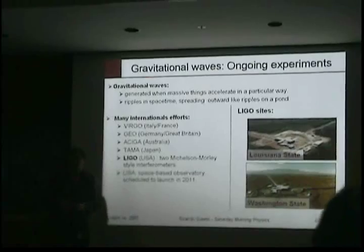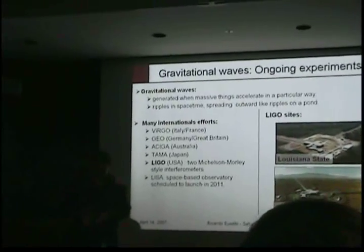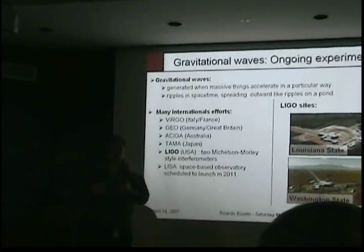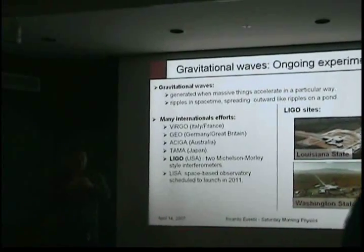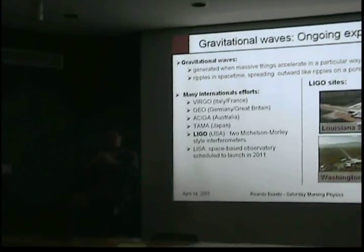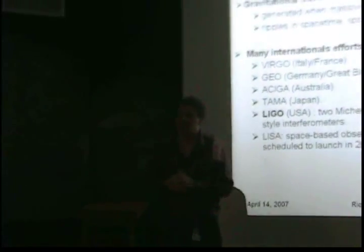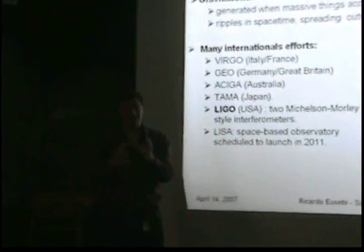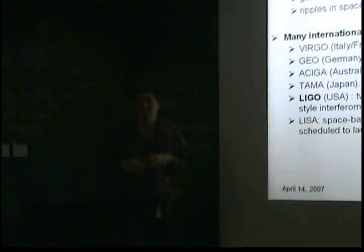Similar things happen when you shake a big piece of mass. But it has to be done in a certain way — you cannot just do it in any way. For example, if you have a spherically symmetric star and this star pulses up and down, increasing its mass for whatever reason, you will not see a gravitational wave. The same is true if you have this thing rotating very fast — you will not see a gravitational wave. Any movement that is spherically symmetric will not emit a gravitational wave. That's something that doesn't happen with a charged spherical object.